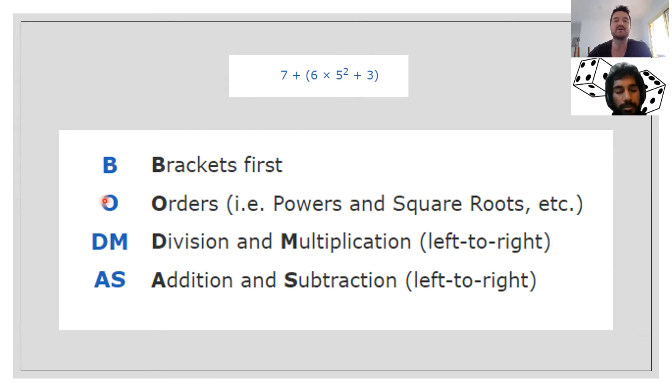So we're in the brackets. We've done the orders. What comes next? Well, division and multiplication left to right. We're still not touching this seven yet. But what we are doing is we're multiplying six by 25, because remember five times five is 25 and then plus three. So six lots of 25, we work that out. And then we've done the multiplication. After that, we need to do the addition.